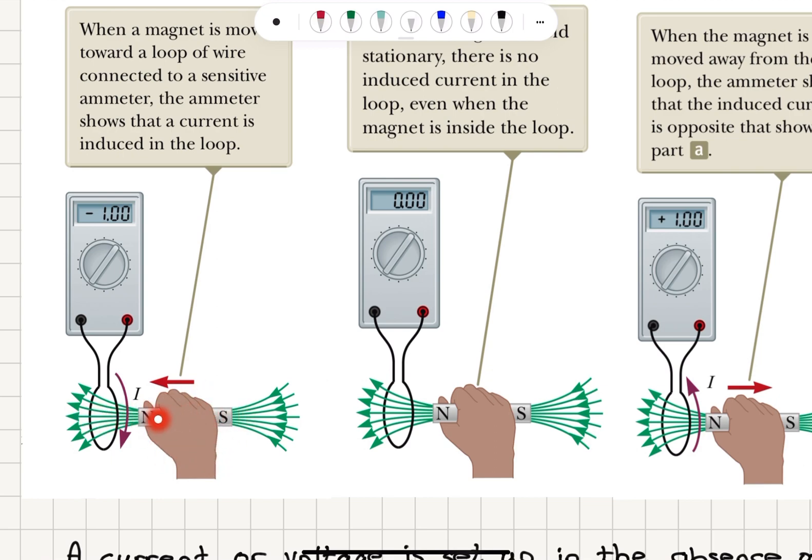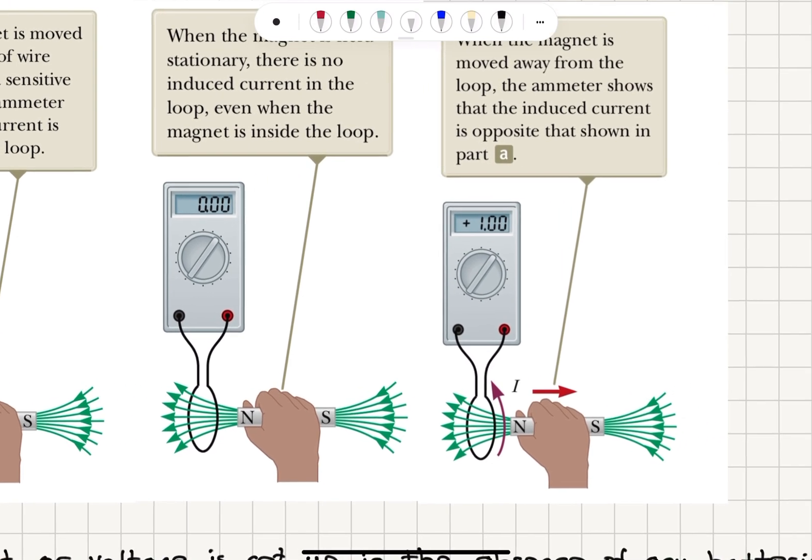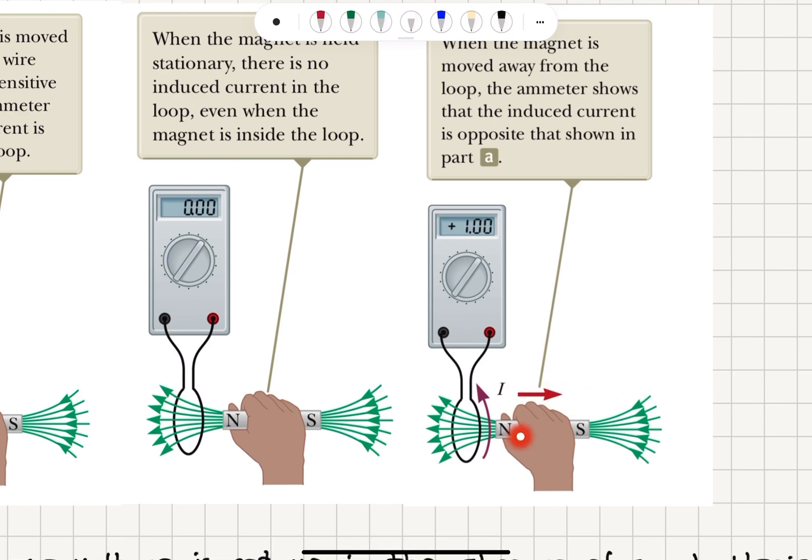When the magnet is approaching, we can see that the flux is increasing through the wire. When the magnet is going away, we see that the flux through the wire, through the loop, will be decreasing.